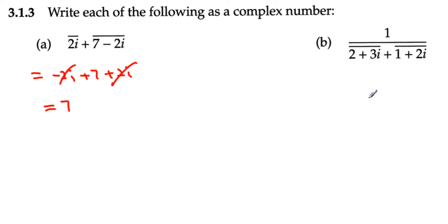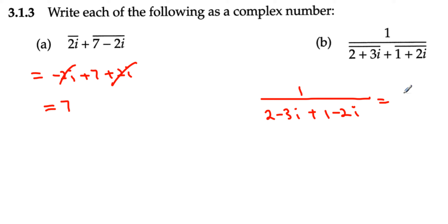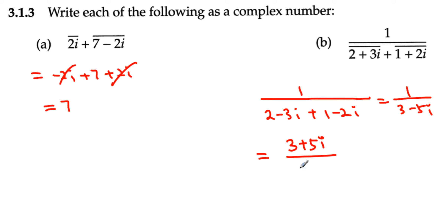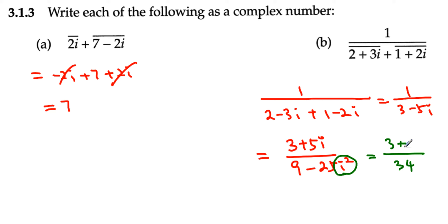For the second part, we get 1 over (2 minus 3i) plus (1 minus 2i), which simplifies to 1 over (3 minus 5i). We multiply top and bottom by its conjugate, 3 plus 5i. The numerator becomes 3 plus 5i. The denominator becomes 9 minus 25i², and since i² is negative 1, this becomes 9 plus 25, which is 34. So the answer is (3 plus 5i) over 34.